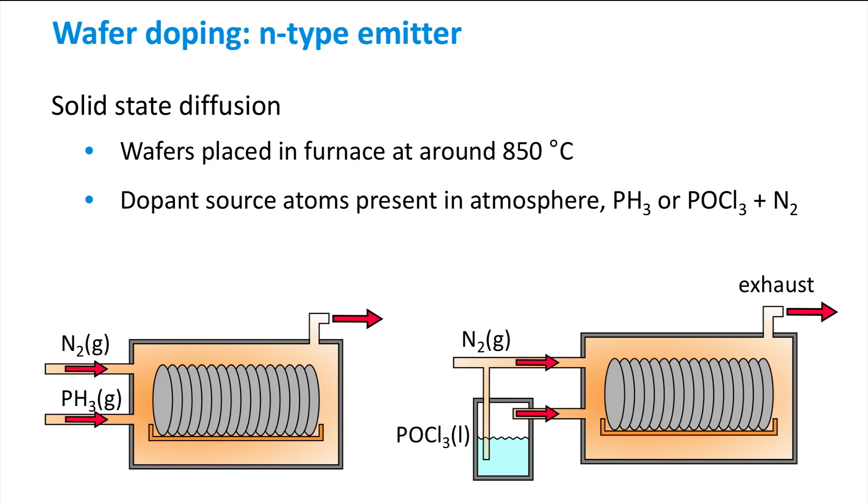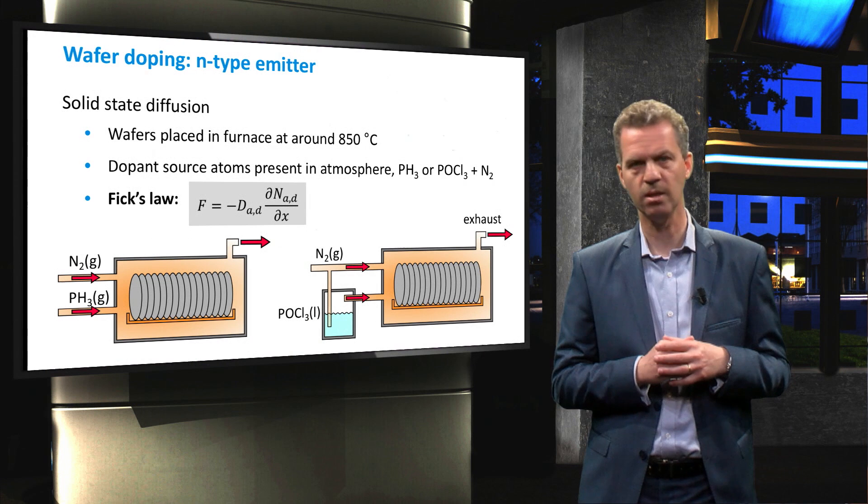When using POCl3 the process is somewhat different. POCl3 is a liquid so it must be purged into the chamber by, for instance, nitrogen. At elevated temperatures, POCl3 will react with oxygen to form phosphorous pentoxide, which is a gas. Fick's law again dictates that the high concentration of phosphorous atoms in the environment will result in diffusion into the silicon wafers.